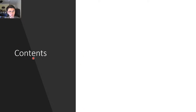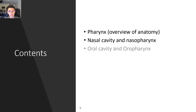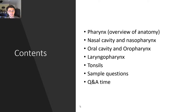Let me go through the contents. We're going to have an overview of the anatomy — the pharynx, the nasal cavity, nasopharynx, the oral cavity and the oropharynx, the laryngopharynx, and finally the tonsils. We're also going to go through some sample questions, and we'll have a question and answer time where you can submit your questions through the link in the chat, anonymously or through the live chat.